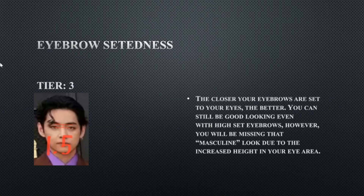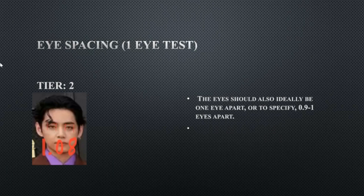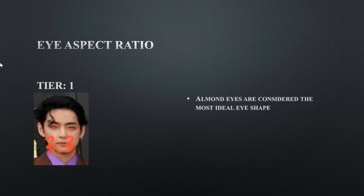His eyebrow height steadiness is at 1.5, meaning he has very high-set eyebrows relative to the eye line. For a more masculinized look, you want eyebrows set more closely to the eyes, but his is still within the normal range. His eye spacing — the one-eye test — is tier 2 at 1.08, so he has slightly spaced-out eyes, which is near ideal.